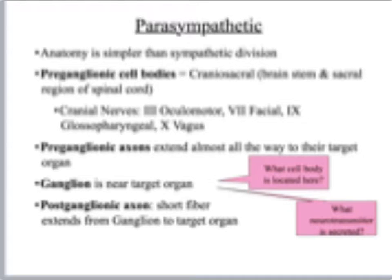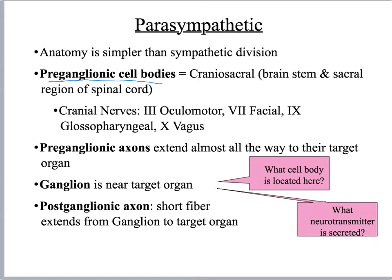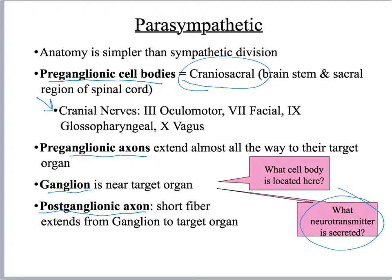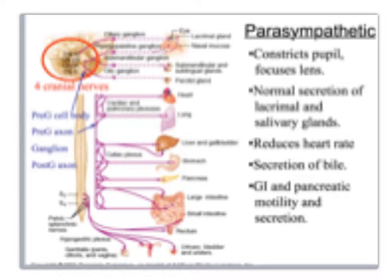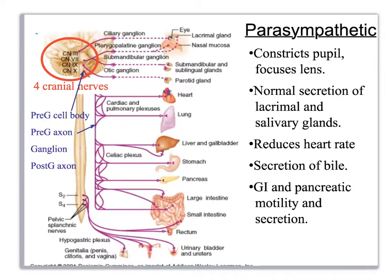Just like the note slide for the sympathetic, we have the same for parasympathetic. Location of your preganglionic cell bodies is craniosacral. You've got cranial nerves associated with parasympathetic innervation — you should know those. The preganglionic axon is super long, the ganglion is near the target organ, and then the postganglionic axon is short. The origin of the preganglionic cell bodies is shown here — craniosacral.